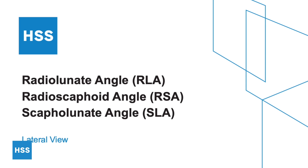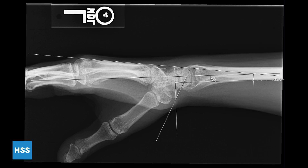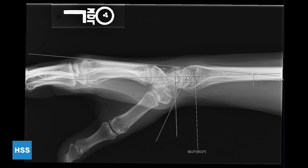Next, we will be measuring the radial lunate, radioscaphoid, and scapholunate angles. Use the measuring tool to measure the angle between the axis of the radius and the line tangential to the lunate. Subtracting this angle from 90 — because 90 is normal — will give you the radial lunate angle. In this case, it would be zero. Now measure the angle between the radial reference line and the long axis of the scaphoid. This acute angle will be your radioscaphoid angle. In this case, it is 64.1.